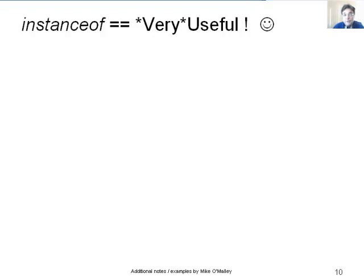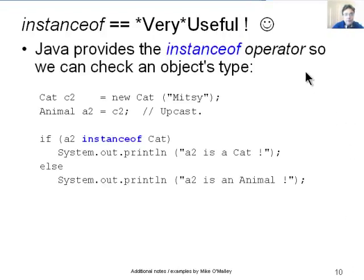But it's treated as an animal object and its cat properties are hidden until the object is downcasted again. So it's treated as an animal for a while until you're downcasted again when it's treated as a cat again. So in Java, there's a very useful operator called the instanceof operator, and it's very useful for checking the type of a data object at runtime. So let's see it in action. So Java provides the instanceof operator so we can check an object's type. And let's declare a cat. C2 equals new Cat Mitzi. Animal A2 equals C2. So we're doing an upcast there. We don't need to put a data type in front inside round brackets because Java does the upcasting automatically for us.